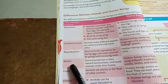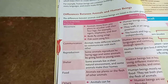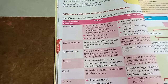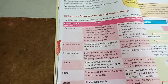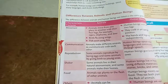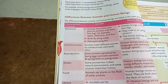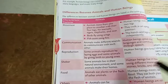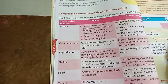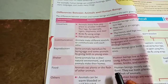The fourth difference is shelter. Some animals live in their natural environment — lions, rabbits, and rats live in the natural environment, and some animals make their own homes, like rats that dig a big hole to live in. But human beings live in homes built using different materials like bricks, cement, iron, and stones.